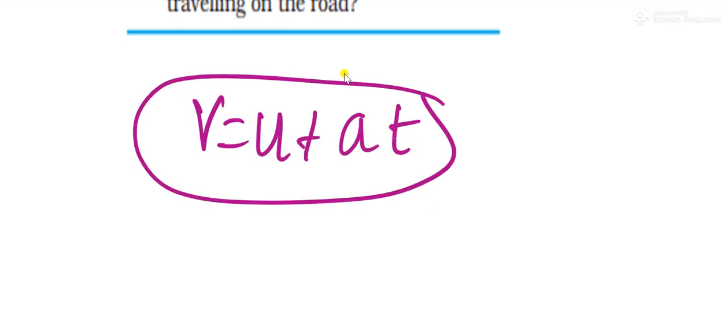You can take any equation of motion. I am taking v equals u plus at, the first equation of motion. Why am I taking this? Because v we know, u we do not know, a we know, t we know. Using this you can get what is u.